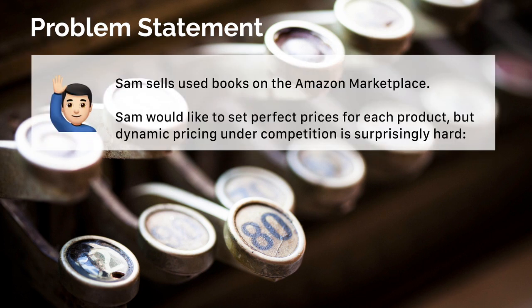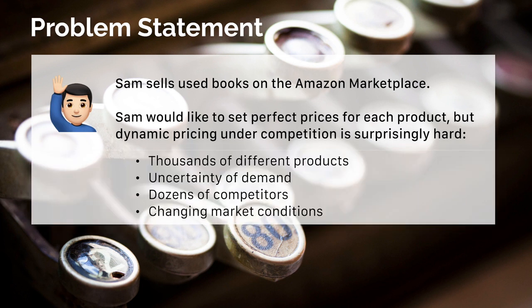Let us talk about the actual problem. Sam is a merchant selling used books on the e-commerce platform Amazon Marketplace. On this platform, we can automatically update prices and react whenever a competitor changes his price. However, the competition on such marketplaces is surprisingly tough. Sam needs to manage his large inventory with thousands of books. Demand on these platforms is highly uncertain — you don't know when consumers arrive or what they are looking for. For many products, Sam faces competition with dozens of active competitors, and moreover, market conditions change steadily.